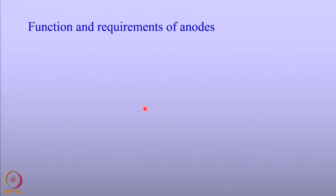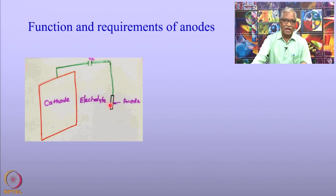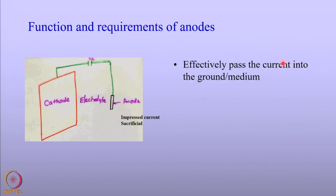The functions and requirements of anodes: as seen in the last class, the anode in the cathodic protection system is buried in the soil, and current leaves the anode, goes through the electrolyte, and enters the cathode. We have two types of anodes available for cathodic protection of engineering structures: impressed current cathodic protection anodes and sacrificial anodes. In both types, the main function is to effectively pass a current in the ground and the medium.